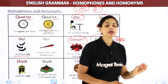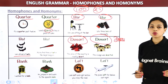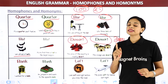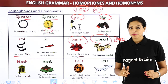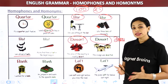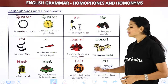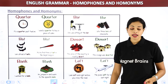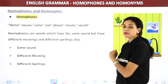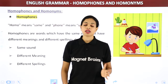If you notice in all these words, the spellings are mostly the same and pronunciations are also mostly the same. These are just a few examples — we are going to look at many more words. Next, let's understand what homophones are.